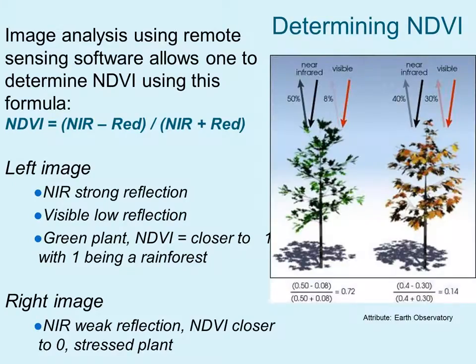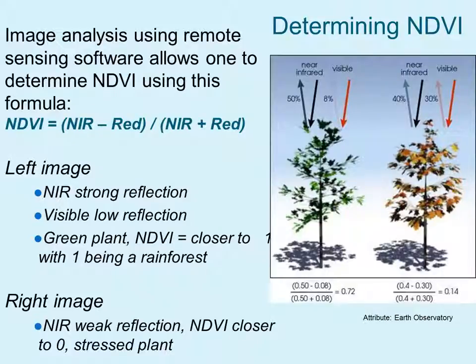We can determine the NDVI using image analysis. Image analysis uses remote sensing software, whether it's ArcGIS or ENVI, to determine the NDVI. The NDVI is determined using the following formula: near infrared minus red, over near infrared plus red.